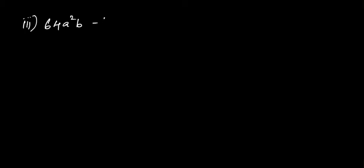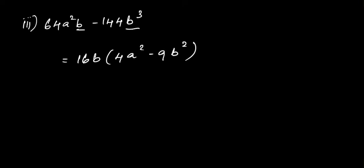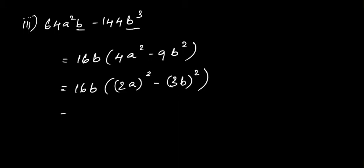Third question: 64a²b - 144b³. Take 16b as common from both terms; we get 4a² - 9b². Now 4a² can be written as (2a)² and 9b² as (3b)². Expanding using the formula, we get 16b(2a + 3b)(2a - 3b).